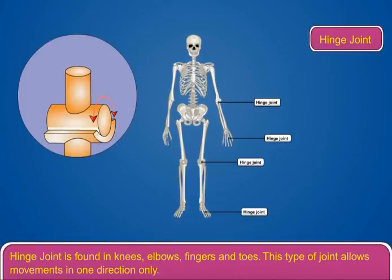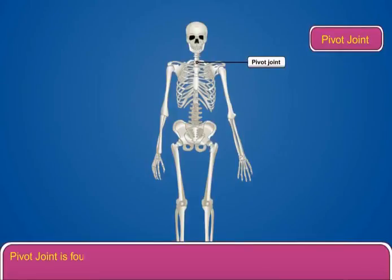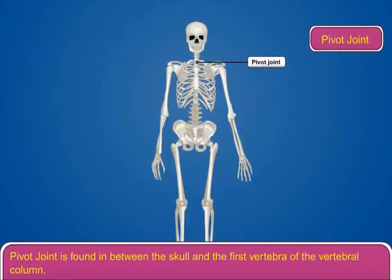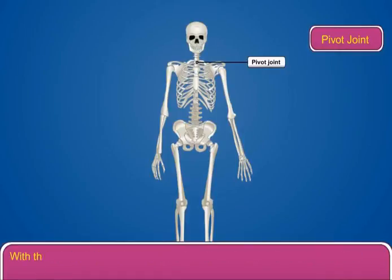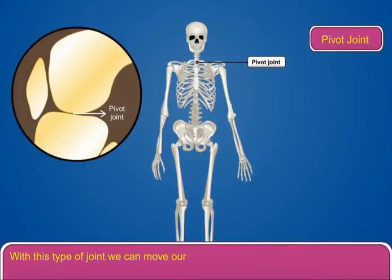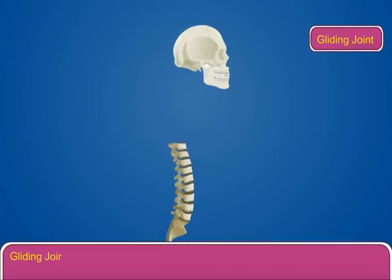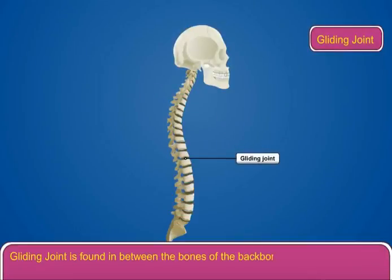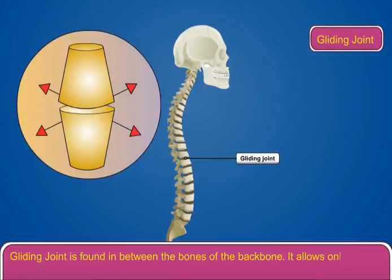The hinge joint is found in the knees, elbows, fingers, and toes, and allows movement in one direction only. The pivot joint is found between the skull and the first vertebra of the vertebral column; with this joint we can move our head sideways, upwards, and downwards. The gliding joint is found between the bones of the backbone and allows only a slight movement between the bones.